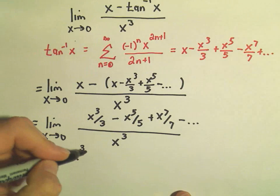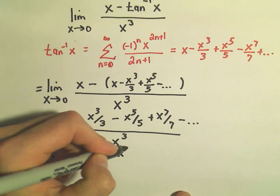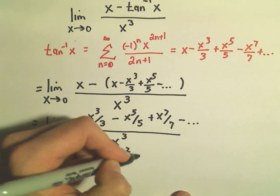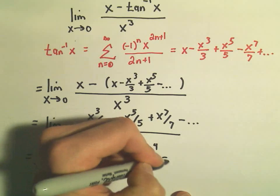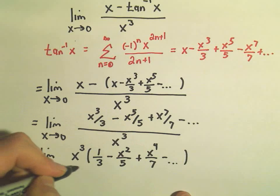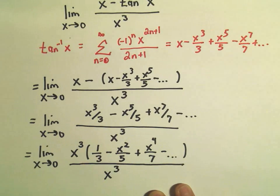So I'm going to factor out x to the 3rd power. And then I would simply have 1/3 minus x squared over 5 plus x to the 4th over 7, etc. Again, all of that is being divided by x to the 3rd power.